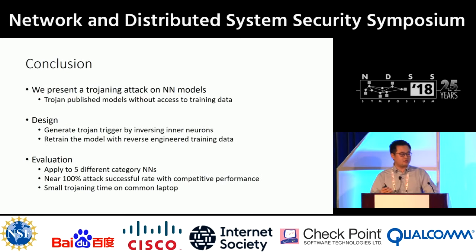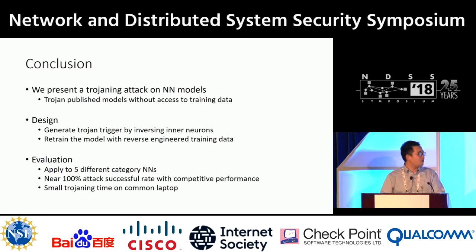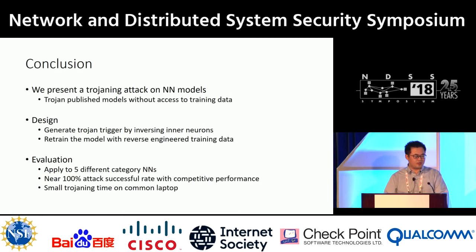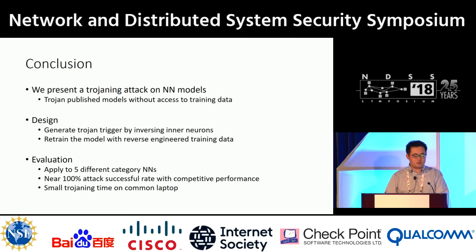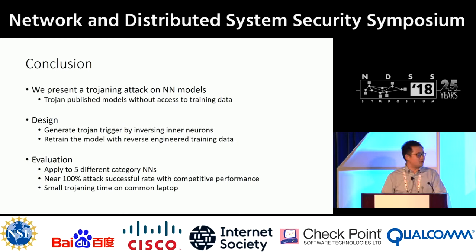In conclusion, we present a backdoor attack on neural network models. Our attack backdoors models without access to training data. We generate backdoor triggers by inverting the neurons, and train the model with reverse-engineered training data. We successfully evaluate our models on five different categories of neural networks, achieving nearly 100% attack success rate with competitive performance on normal data. It only requires small training time on a common laptop. Thank you.